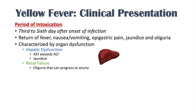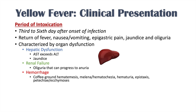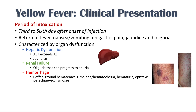Hemorrhage occurs in the period of intoxication — that's why we call yellow fever a hemorrhagic fever. Individuals can have coffee ground hematemesis, melena and hematochezia from intestinal bleeding, hematuria, epistaxis, and petechiae and ecchymosis on the skin. This happens due to thrombocytopenia from splenic issues and decreased coagulation factors — specifically decreased factors 2, 5, 7, 9, and 10 — many of which are made in the liver, which is damaged by viral replication.